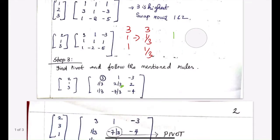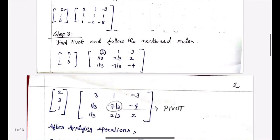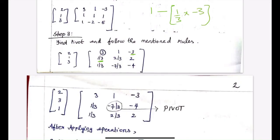Similarly, for another position, we want the new value. We take the old value minus the product of the divided element and the corresponding element. So 1/3 into -3, giving us 1 plus 1 equals 2. So we got this value as well. Similarly, we can do the modification and we'll get the new modified A matrix.